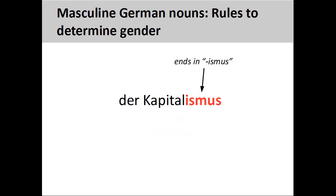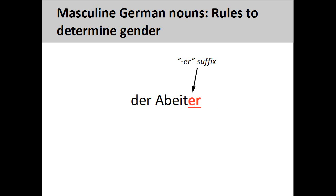Nouns ending in '-ismus', such as 'Kapitalismus' (capitalism), are masculine. Nouns ending in '-er' that are derived from verbs are masculine — here the noun 'Arbeiter' (worker) is derived from the German verb 'arbeiten' (to work). Nouns ending in '-ich', such as 'Teppich' (rug or carpet), are masculine.